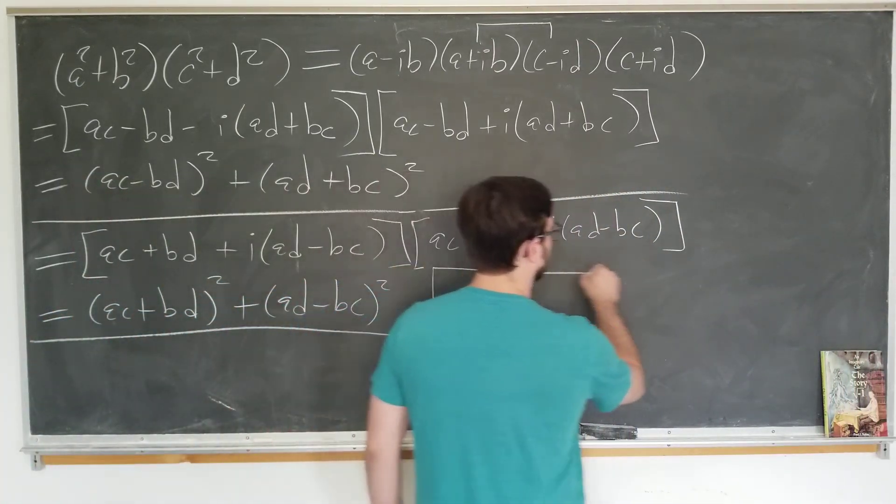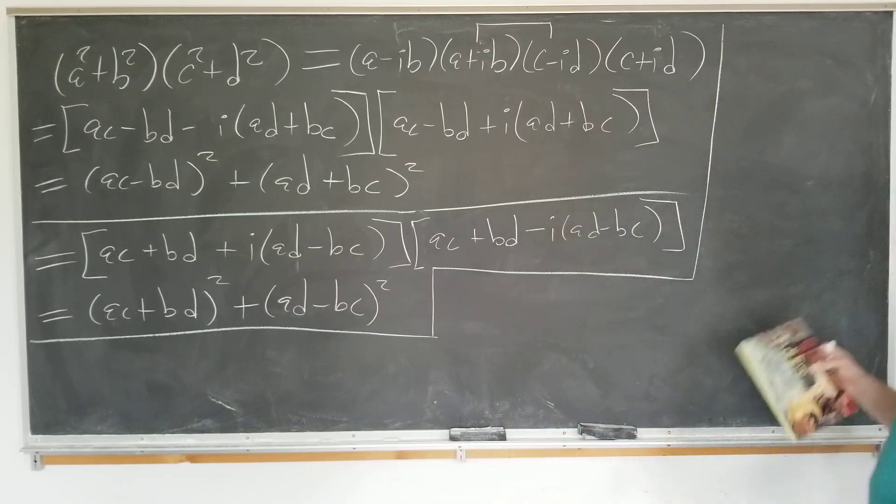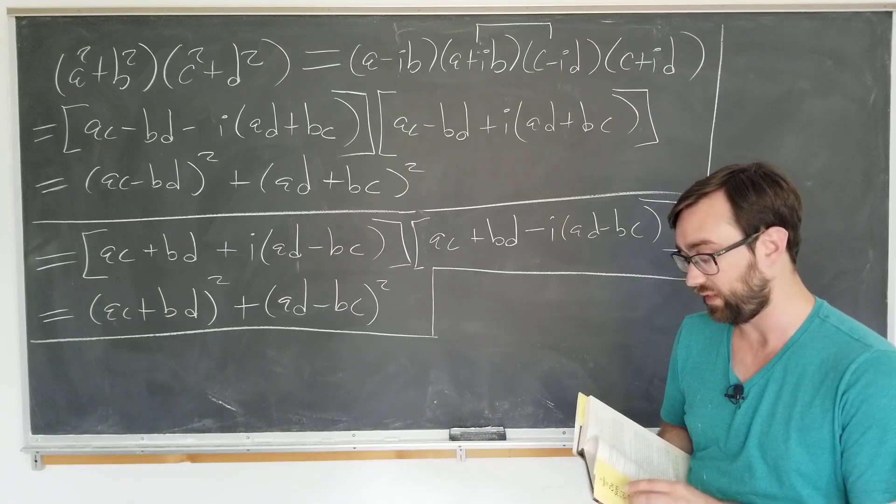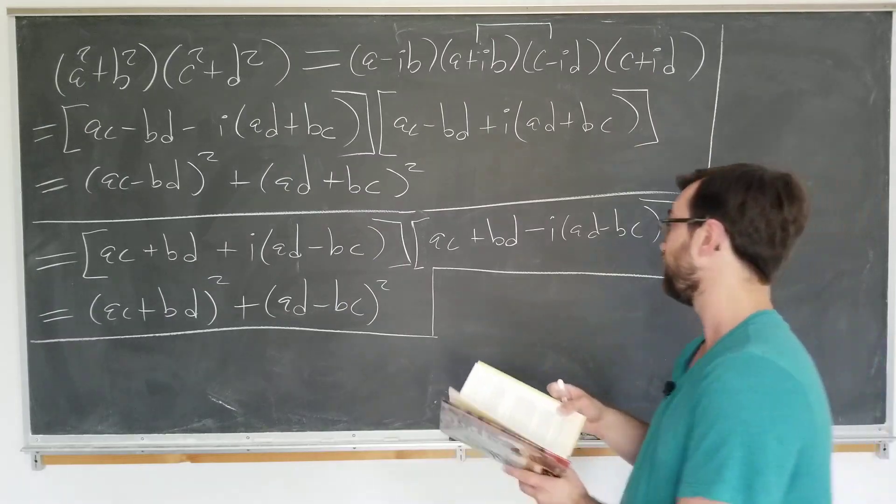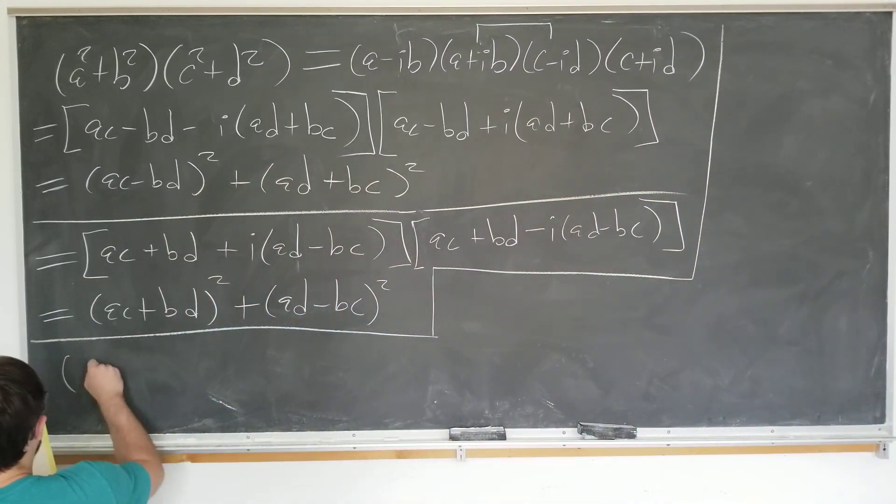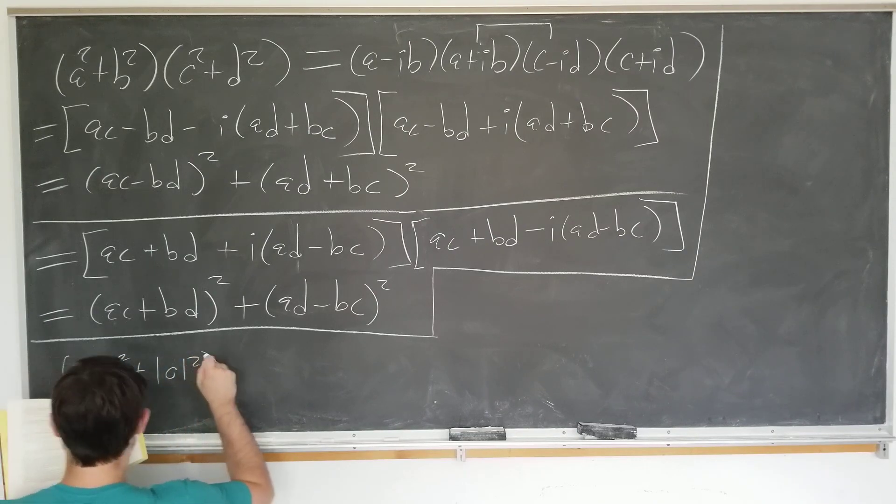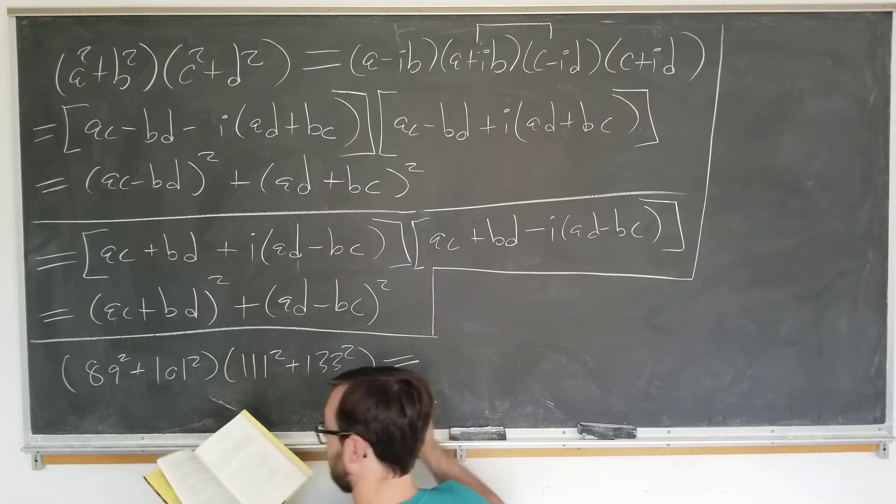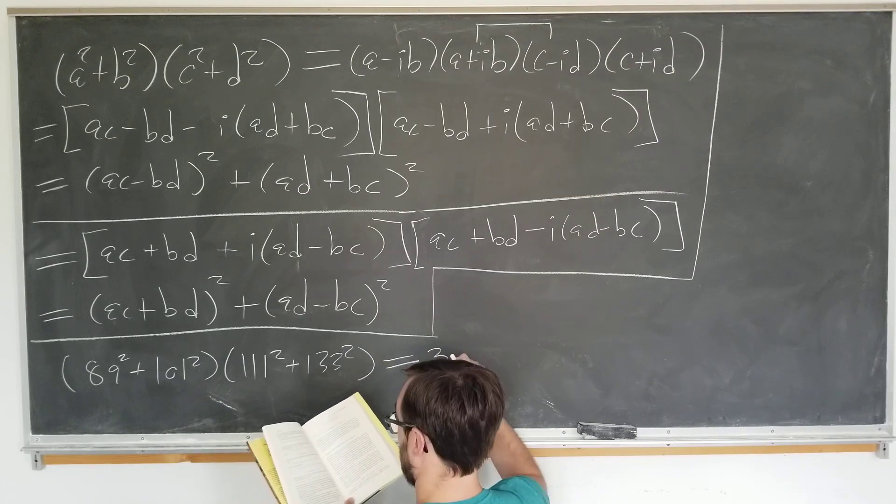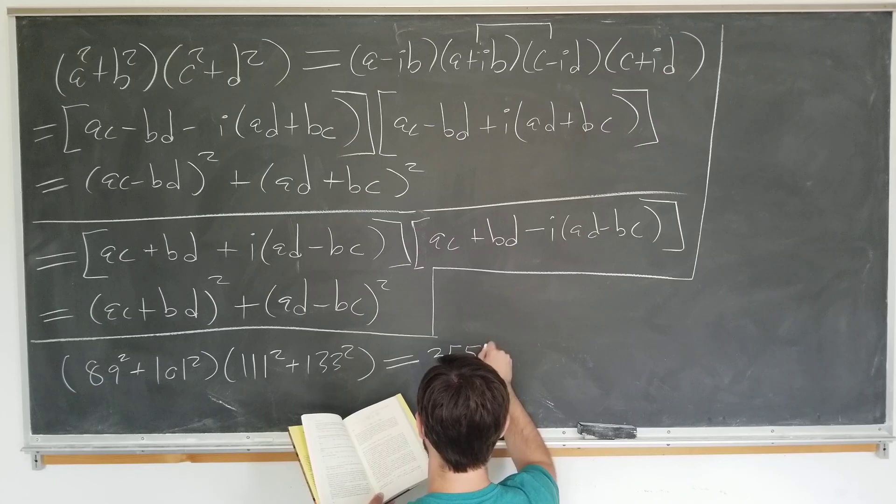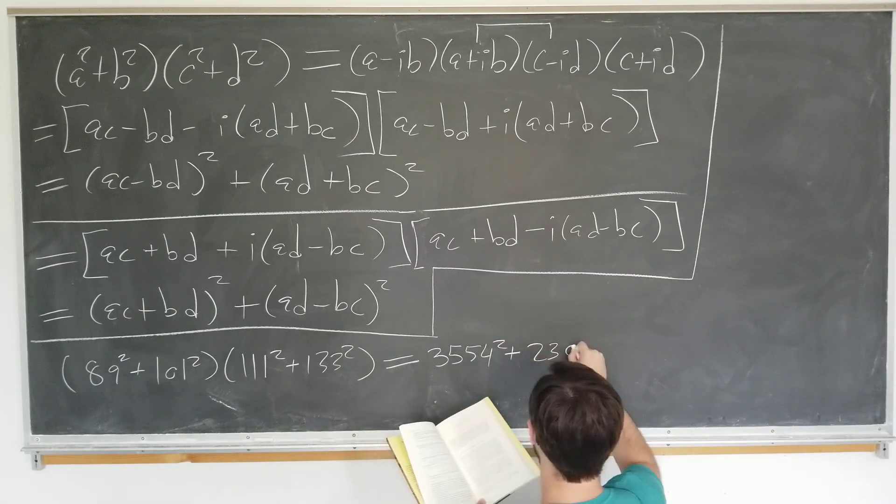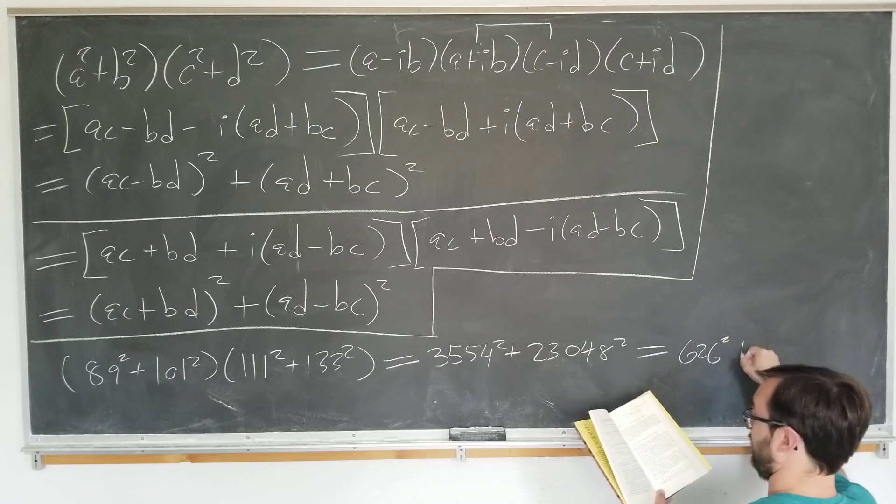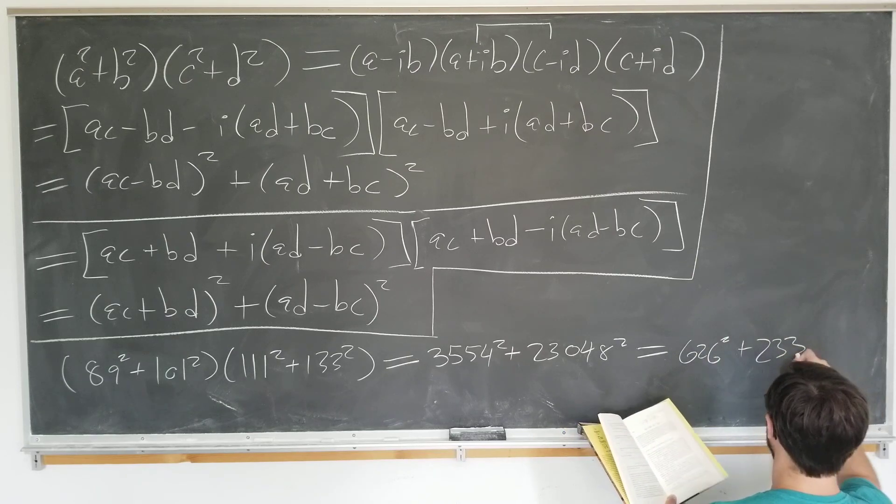Well, let's go ahead and as the book indicates, let's use it to find the solution for our original problem. So if we plugged in A, B, C, and D to this expression, we could indeed find the following. That 89 squared plus 101 squared times 111 squared plus 133 squared is actually equal to 3,554 squared plus 23,048 squared.